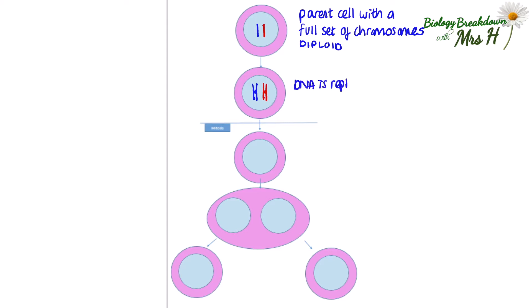Just before mitosis occurs, the DNA is replicated — that means copied. So each chromosome is copied because the chromosome is a chunk of DNA. The cell will contain two identical copies of all the chromosomes.